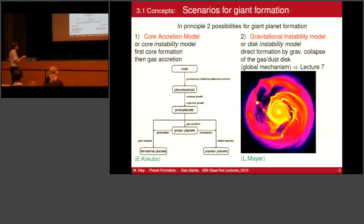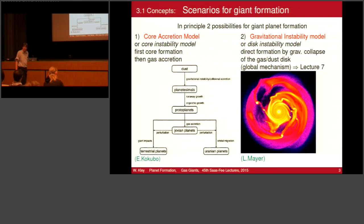The instability condition depends on the mass of the clump, the temperature (the sound speed), and the rotation rate at that radius. This will be covered on Friday. Today we'll look at the standard core accretion model for the solar system and probably many other exosolar planets.